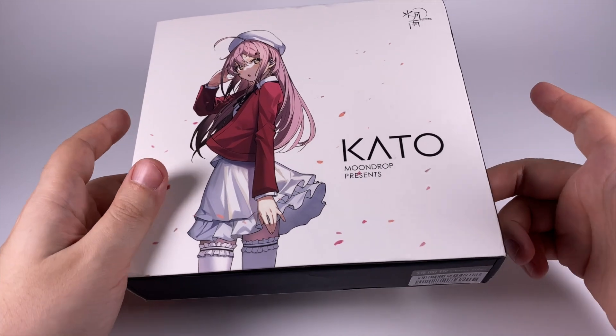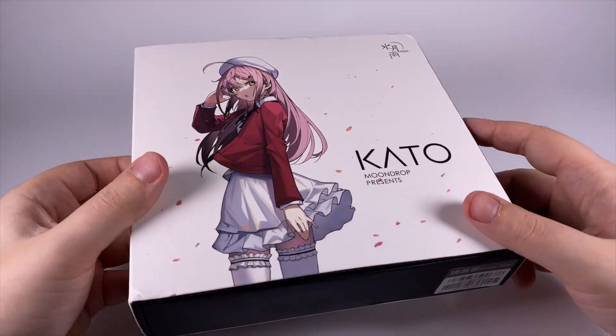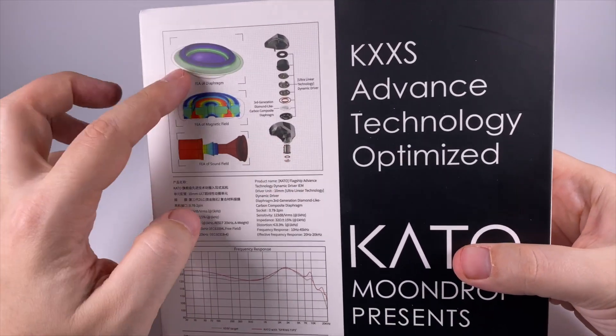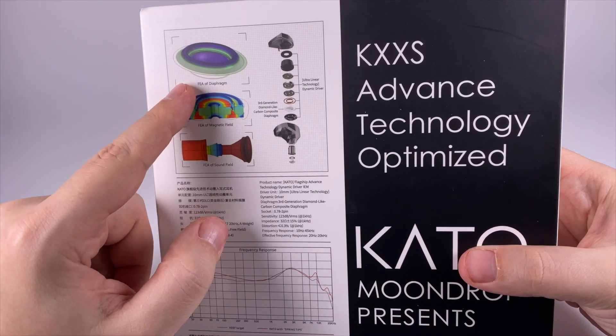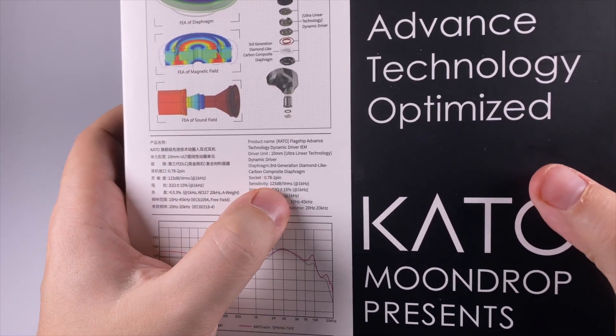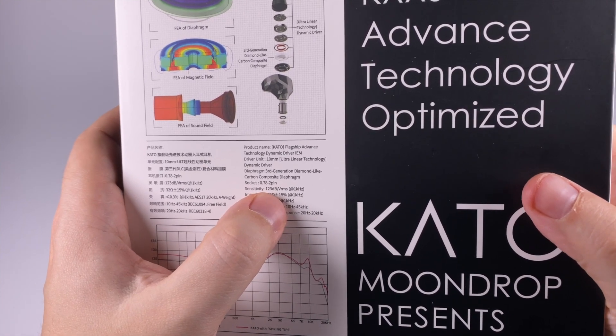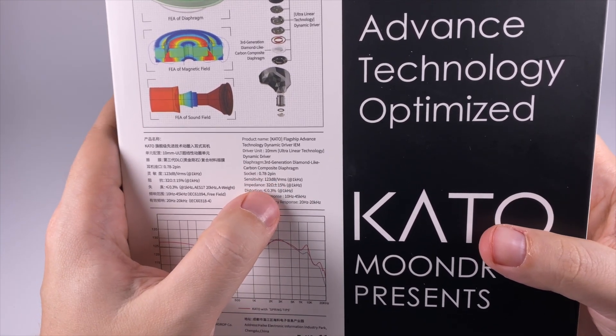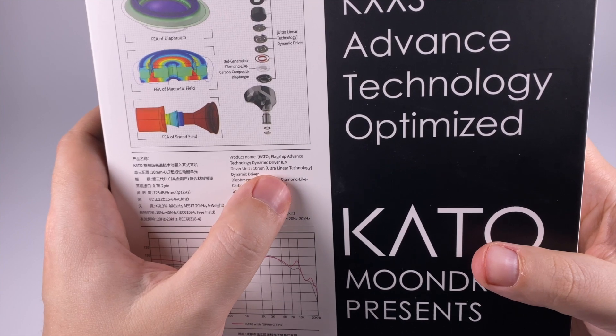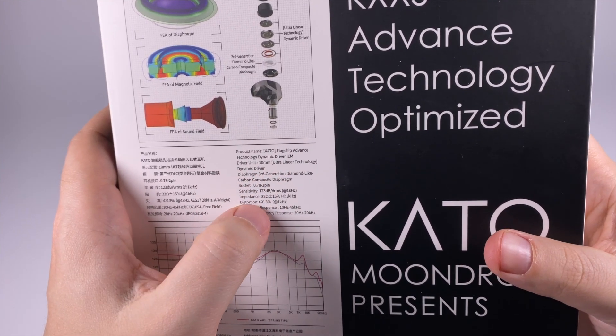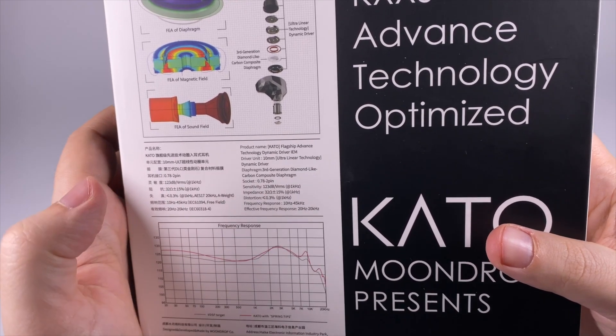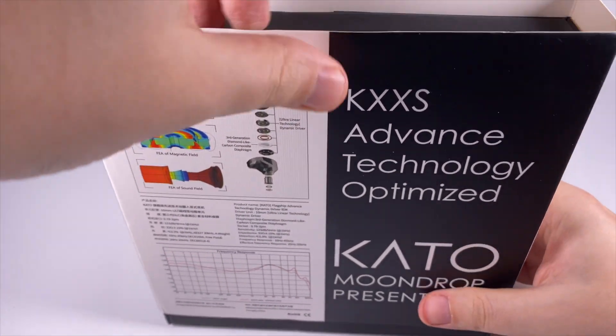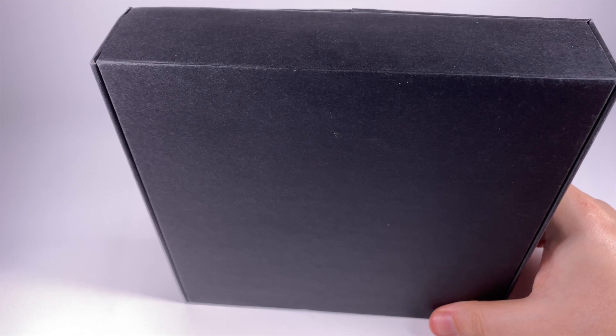The package has a traditional anime girl on the front. On the back side you'll get a lot of information, exploded diagrams, information about the diaphragm and so on. What's interesting is 123 decibels of sensitivity, but it's per volt RMS, not per milliwatt like many other companies. 10 millimeter dynamic driver with ultra linear technology and 32 ohms of impedance, really low level of harmonic distortion.